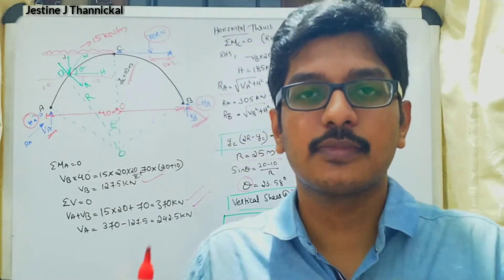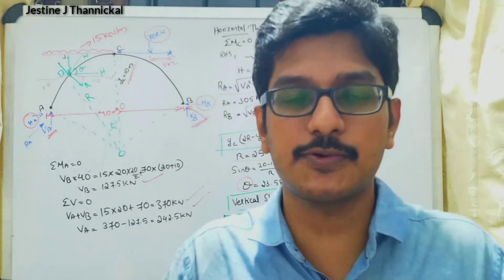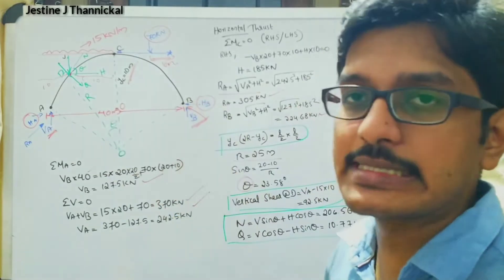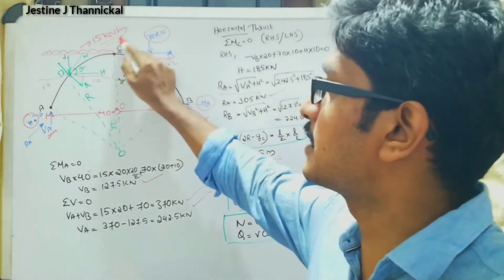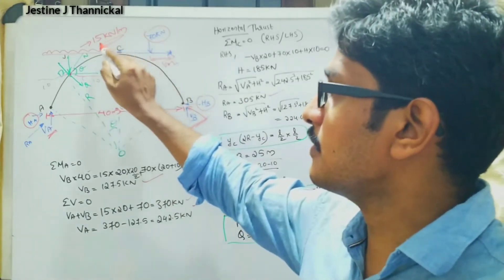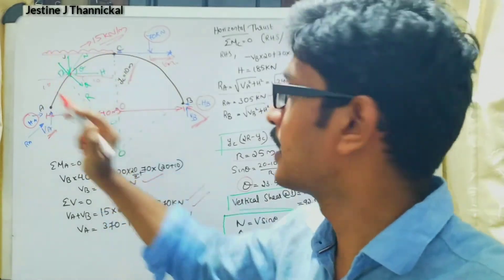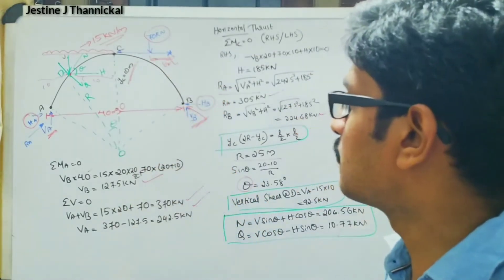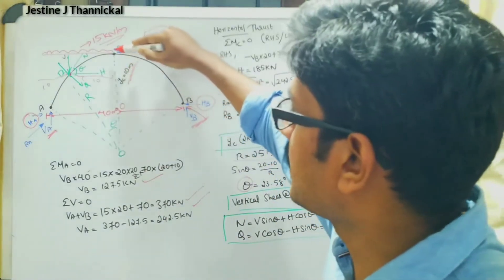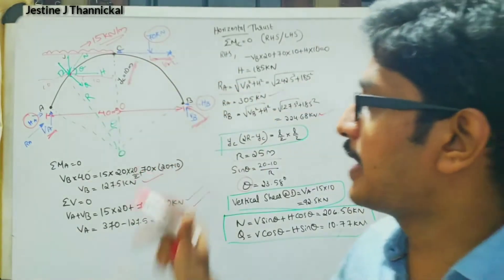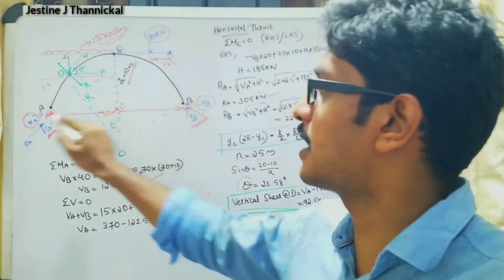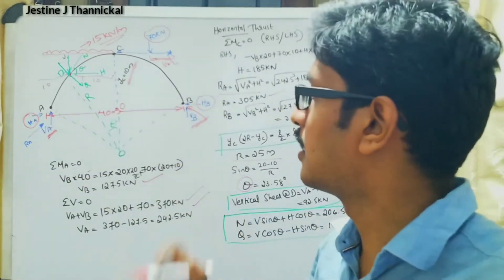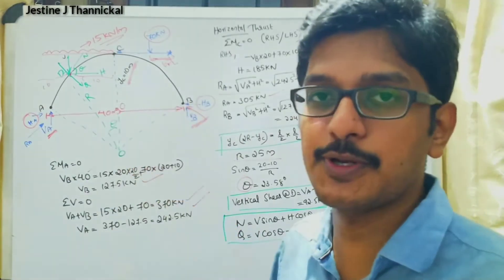After writing down the question, please draw the sketch with all the details given. Mark the three hinge points A, C, and B. The UDL of 15 kilo Newton per meter acts over the left half span, and the 70 kilo Newton concentrated load acts at the right quarter span, which is 10 meters from point B. The central rise (crown point) is 10 meters. We need to find vertical reactions VA and VB, and horizontal reactions HA and HB, which will be equal since no horizontal external force acts. The span is 40 meters, so each half span is 20 meters.